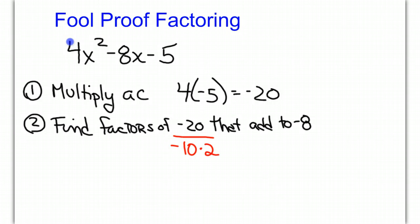We're going to rewrite the equation and instead of negative 8x we're going to put in a negative 10x and a positive 2x. Our equation becomes 4x squared minus 10x plus 2x minus 5 equals 0.